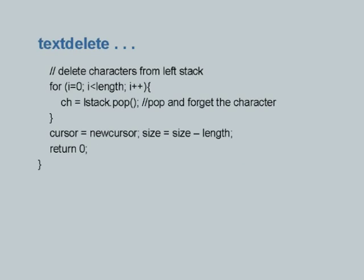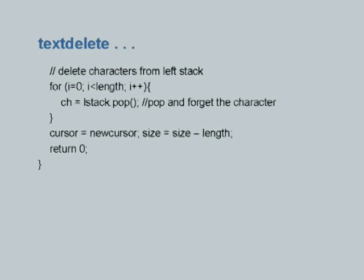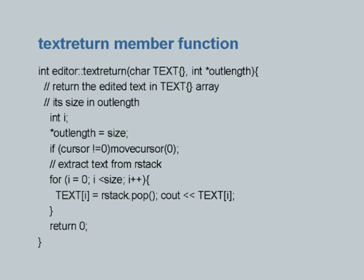For deletion, you basically delete from the left stack — you say left stack dot pop and forget those characters which come out. For insertion or deletion you must always reset the cursor to the correct position and reset the size of the text being edited. This is the additional member function we have written, because any time we give a text to be edited, that editing happens through edit commands — insert a word, move cursor, delete so many characters, and a quit command. When we quit, we want the edited text to be returned to us.